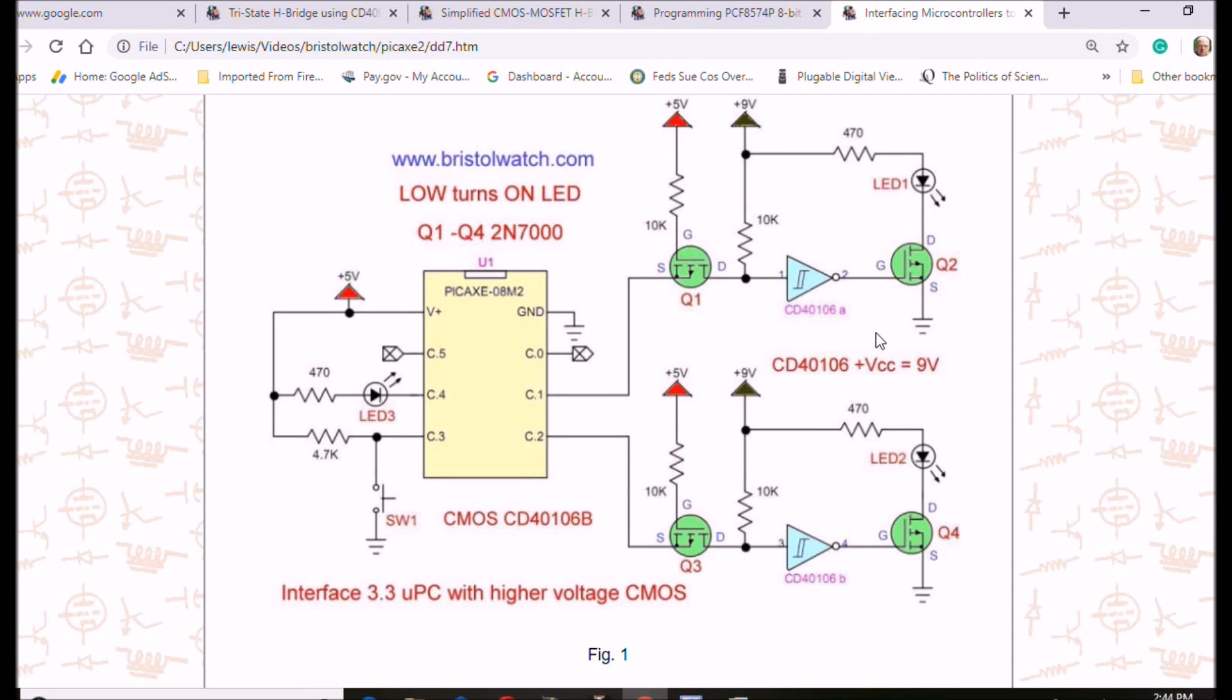So very simply, it's this, and this is non-inverting in this configuration. A high here is going to be a high here, there's going to be a low on the gate of Q2, and it's going to turn off, and the LED will be off.